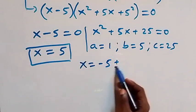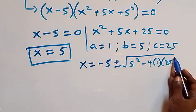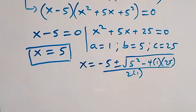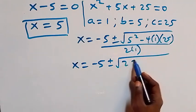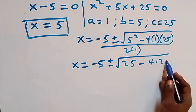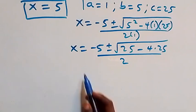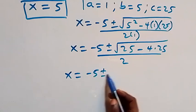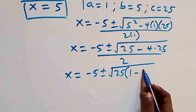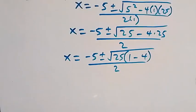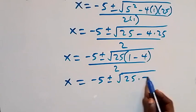Applying the formula, x equals minus 5 plus or minus square root of 5 squared minus 4 times 25, over 2. Factoring out 25 under the radical gives x equals minus 5 plus or minus square root of 25 times 1 minus 4, over 2. That is x equals minus 5 plus or minus square root of 25 times negative 3, over 2.